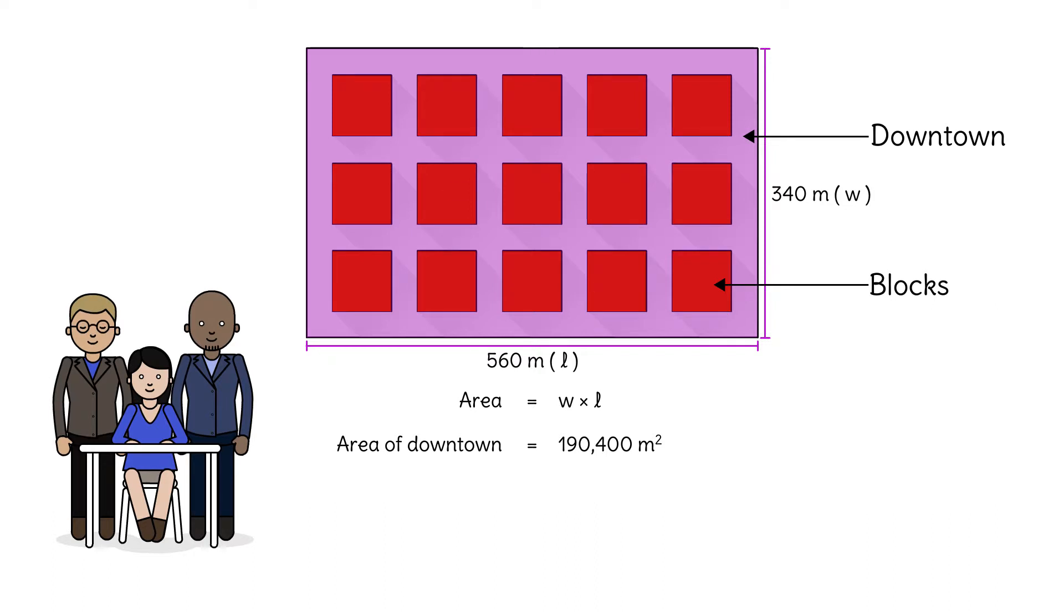The city blocks are 100 by 100 squares. The area of one block is 100 times 100, or 10,000 square meters. There are 15 blocks. The area of all 15 blocks is 15 times 10,000, or 150,000 square meters.